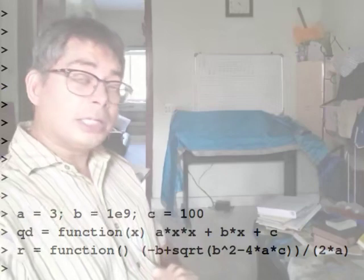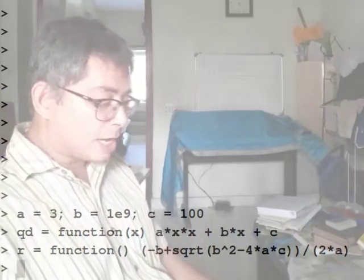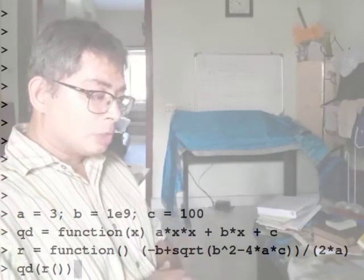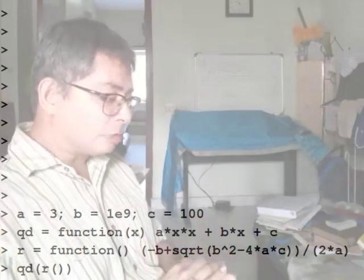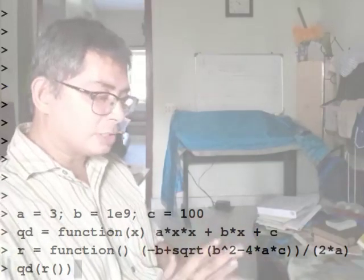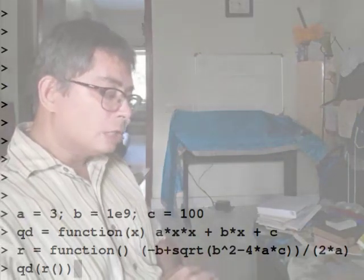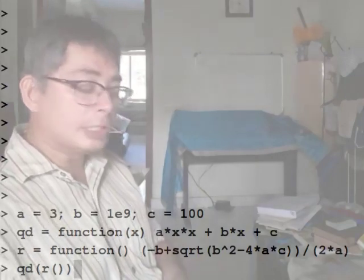So let us see what is the result that we are getting. So I will try to evaluate the quadratic at the root. So though I have called r a function, r is actually just a constant. I could have - I do not know why I wrote it as a function. I could have just written it as a number. So when I evaluate the quadratic at r, I should get 0.